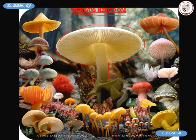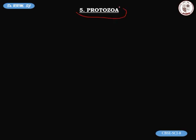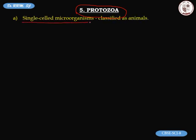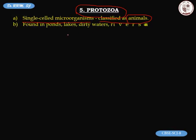Now let us discuss our last type of microorganism in this video: protozoa. Protozoa are single-cell microorganisms classified as animals. They are found in ponds, lakes, dirty waters, rivers, dams, soils, and marshy lands — practically everywhere.